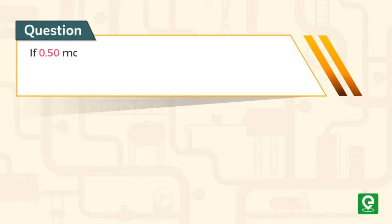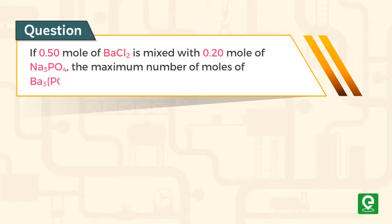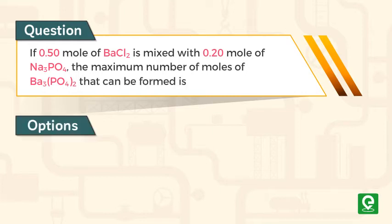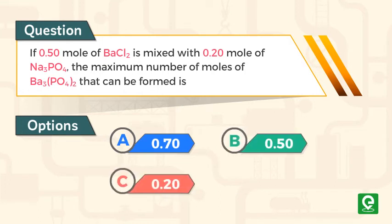Let's apply these steps to solve a problem. If 0.50 mole of BaCl₂ is mixed with 0.20 mole of Na₃PO₄, the maximum number of moles of Ba₃(PO₄)₂ that can be formed is: (A) 0.70, (B) 0.50, (C) 0.20, or (D) 0.10. This question was asked in the IIT JEE 1981 exam.